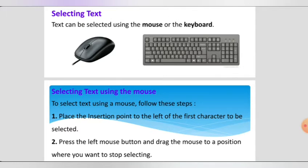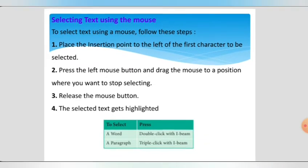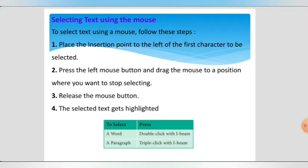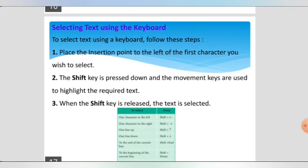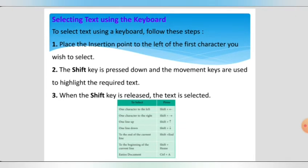Then press and hold the left mouse button and drag to the position where you want to stop selecting. Release the mouse button — the selected text gets highlighted. That is how you select text using the mouse.